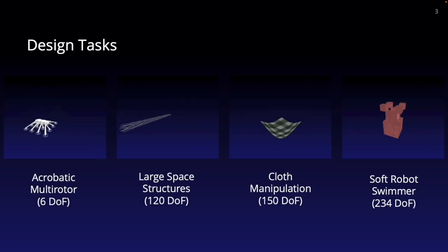In this work, we look at the following four control and actuator placement problems: an acrobatic multirotor, a large flexible space structure, a cloth manipulation task, and a soft robotic swimmer.